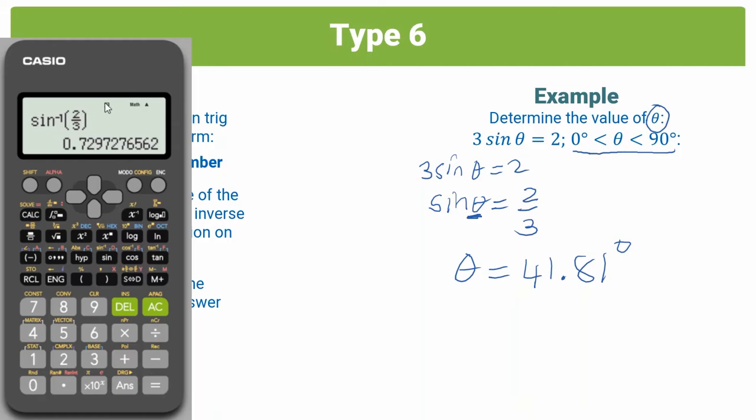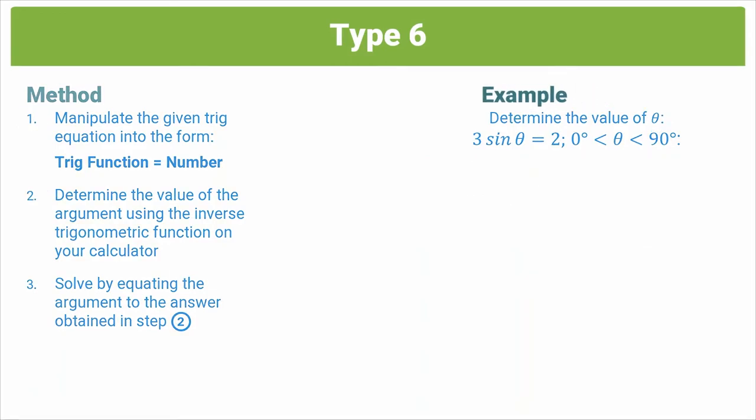Degrees and radians are just different ways of representing the value of angles, and you always want to be working in degrees. So just take note of that. So I'm going to set my calculator back to degrees. So let's just try another question.